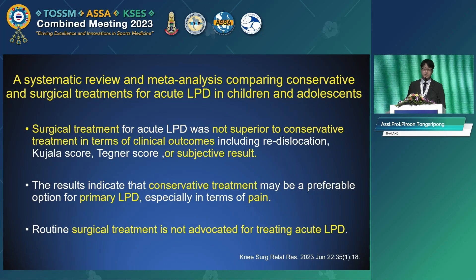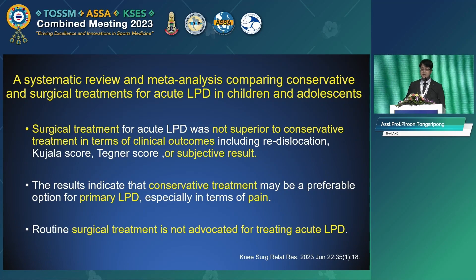A systematic review and meta-analysis comparing conservative and surgical treatment for acute lateral patella dislocation found that surgery was not superior to conservative treatment in terms of clinical outcomes including re-dislocation rate, Kujala score, Tegner score, and subjective results. The results indicate that conservative treatment may be a preferable option for first-time lateral patella dislocation, especially regarding pain. Routine surgical treatment is not advocated for acute lateral patella dislocation.